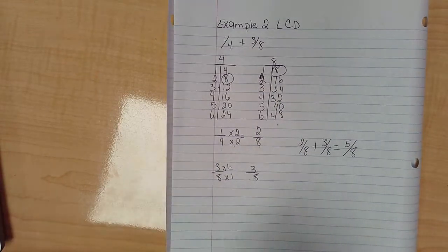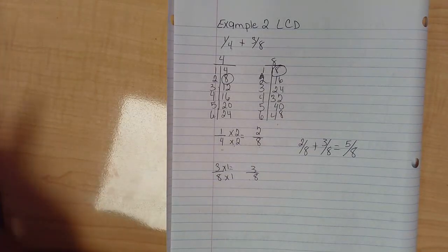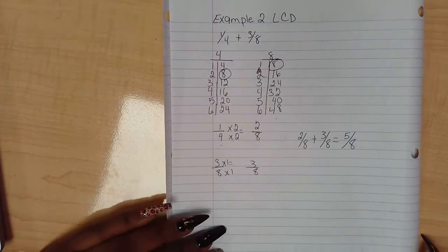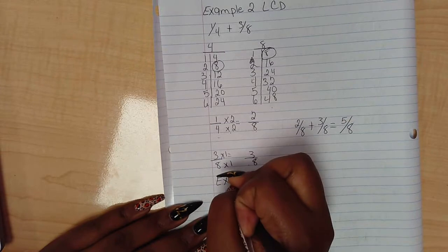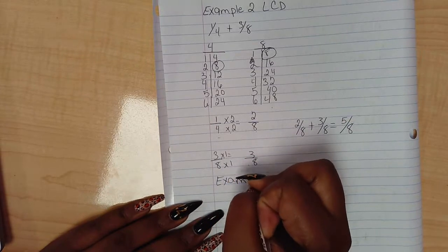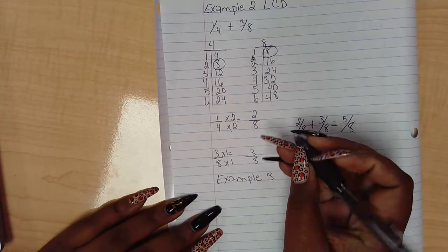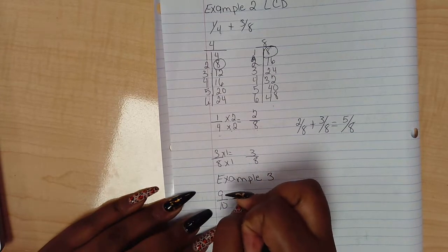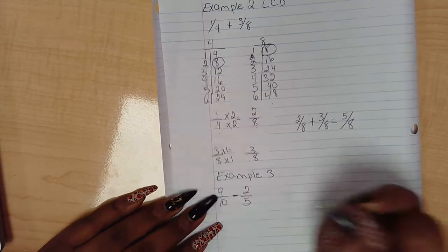Let's do one more example — and then we're going to do subtraction. Let's do 9 tenths minus 2 over 5.